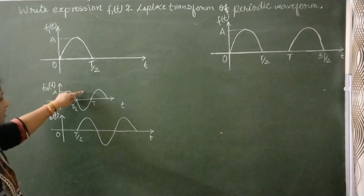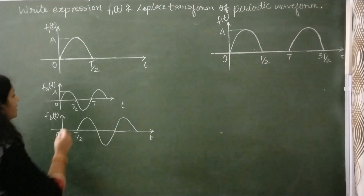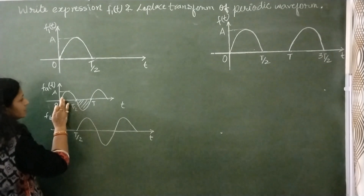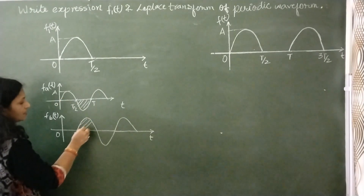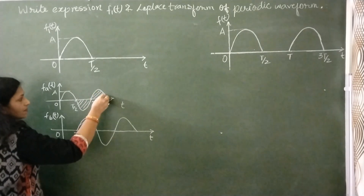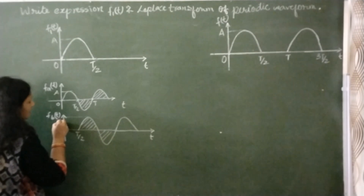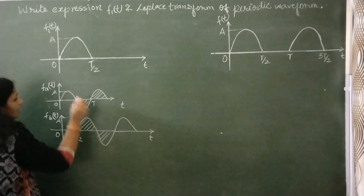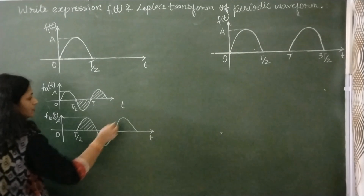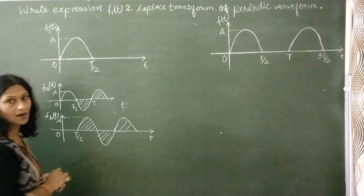If we add these two waveforms, the lower half of the first one is cancelled by the upper half of the second one. This upper half is cancelled because they are of the same amplitude and same time duration, and this also will be cancelled by its next lower half.